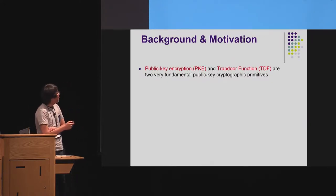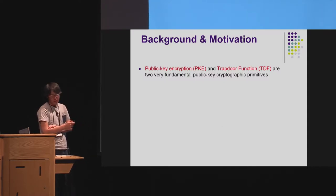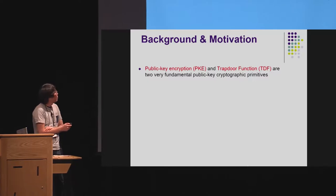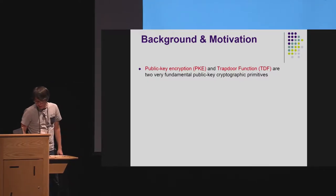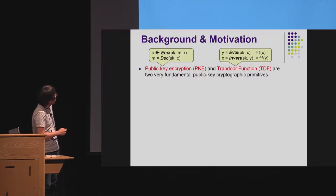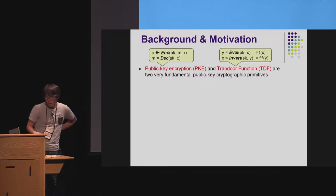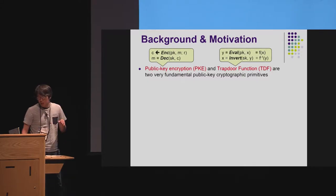Public key encryption schemes and trapdoor functions are two very fundamental public key cryptographic primitives. They are very related. The main difference is that in the encryption algorithm of the PKE, the randomness used in the encryption is not necessarily recovered in the decryption.